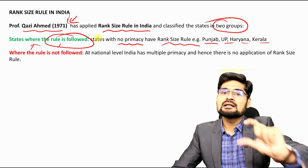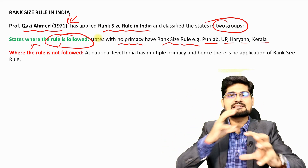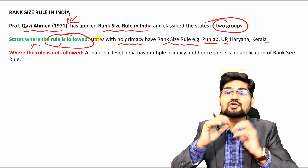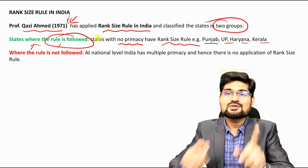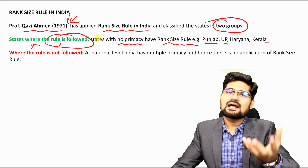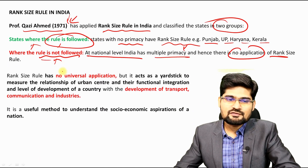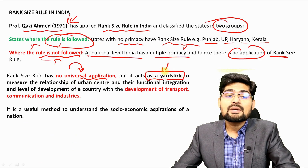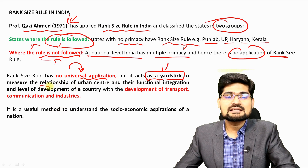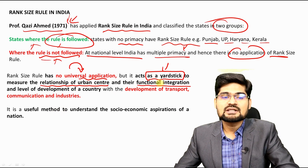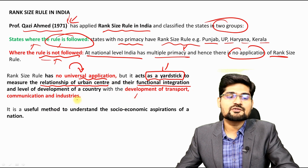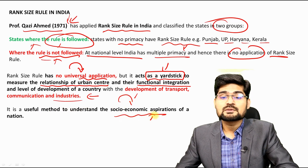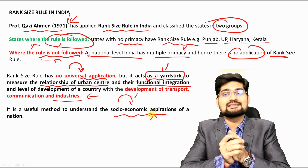States where rank size rule is followed show no primacy. Where rank size rule is applicable, primacy may not be applicable at the same time, since primacy requires the first city to be at least proportionately twice the second city. Rank size rule has no universal application, but it acts as a yardstick to understand the relationship of urban centers, their functional integration, transport-communication-industry development, and the socio-economic aspirations of a nation.